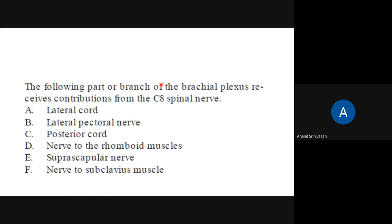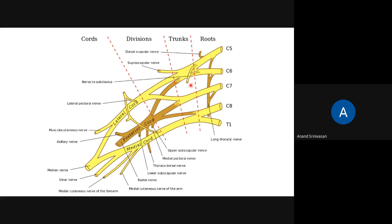Your questions can be like this, or it could be a multiple choice question: 'The following part or branch of the brachial plexus receives contribution from the C8 spinal nerve - which one of these is correct?' Is it the lateral cord, lateral pectoral nerve, posterior cord, nerve to the rhomboid muscles, suprascapular nerve, or nerve to subclavius muscle? Posterior cord - very good! How did you find out?